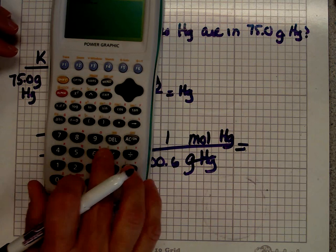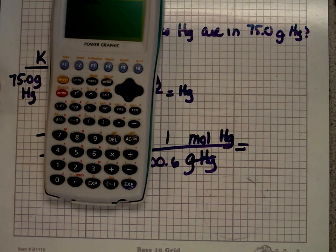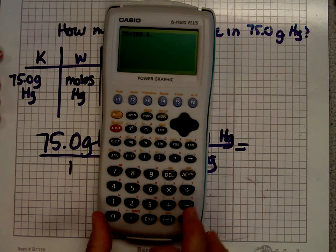75 divided by 200.6. And I don't know if you can see that on my screen or not. But using my calculator, I get 0.3738 and it goes on and on.